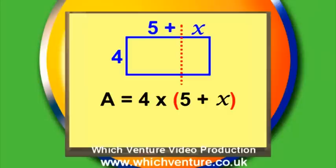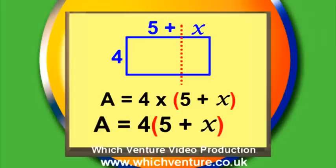Once we have the brackets, we no longer need this multiplication sign here, because the brackets automatically mean we multiply by the 4. So the expression for area is now 4 brackets 5 plus x close brackets.